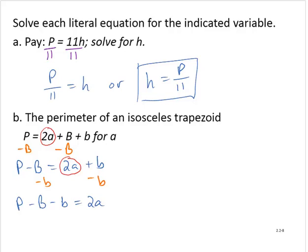So I now have the variable term isolated. To isolate the variable itself, I will divide through by 2. I have to divide each of these terms by 2 or the entire expression by 2. So then I can write that a equals P subtract capital B subtract lowercase b divided by 2.